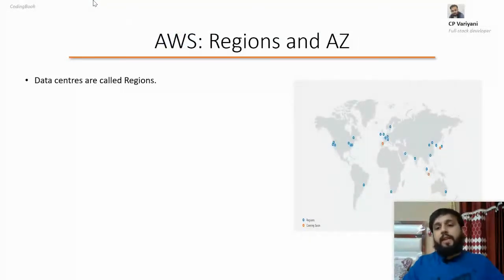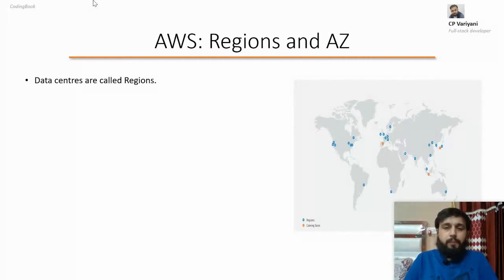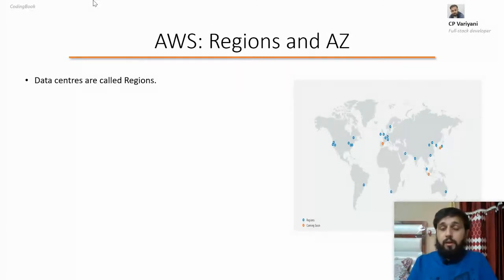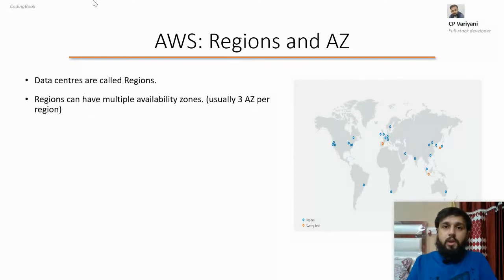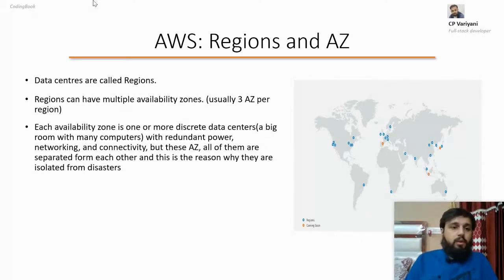Let's first understand regions. The diagram you're looking at on the right-hand side has blue dots and orange dots indicating regions. In AWS, blue dots indicate regions that are already available, and orange dots indicate regions that are about to come. Regions are basically data centers — physical locations where your data will reside. You can consider them as the physical location of your data. Now, further, regions can have multiple availability zones.